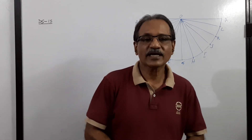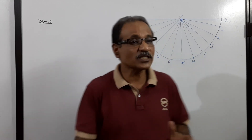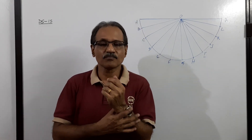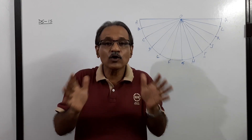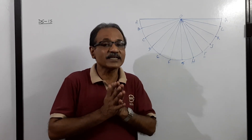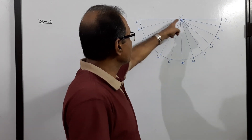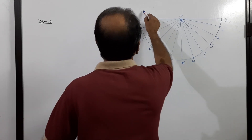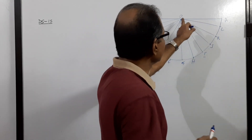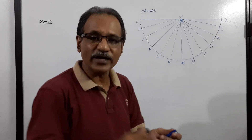Hi students, welcome to engineering graphics class. I am Dr. Vinod Kumar. We are going to discuss an extremely important question that has come in almost all universities. The development of a cone is a half circle of radius 100mm. This means with center O and 100mm radius, I draw a half circle — theta is 180 degrees — and divide it into 12 equal parts a, b, c, d up to a. That is the development of the cone as per the question.